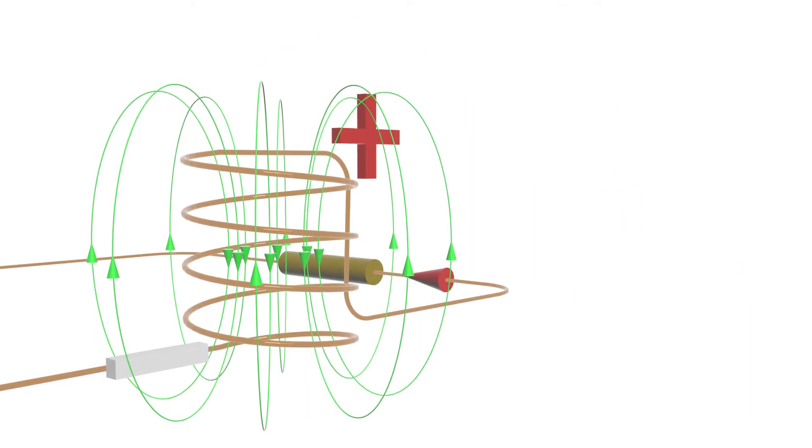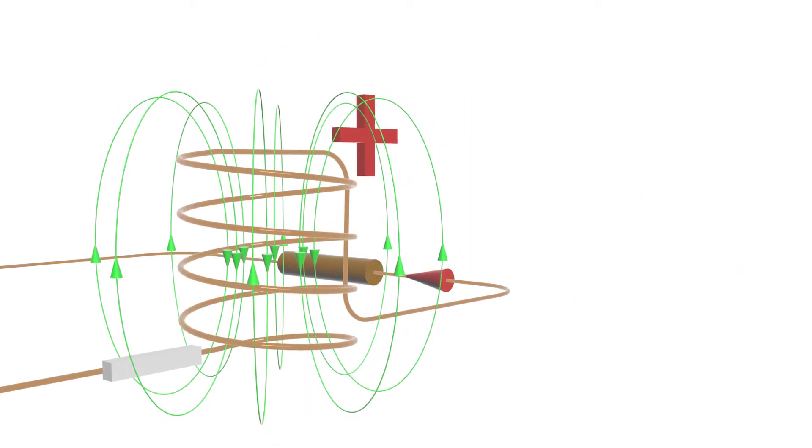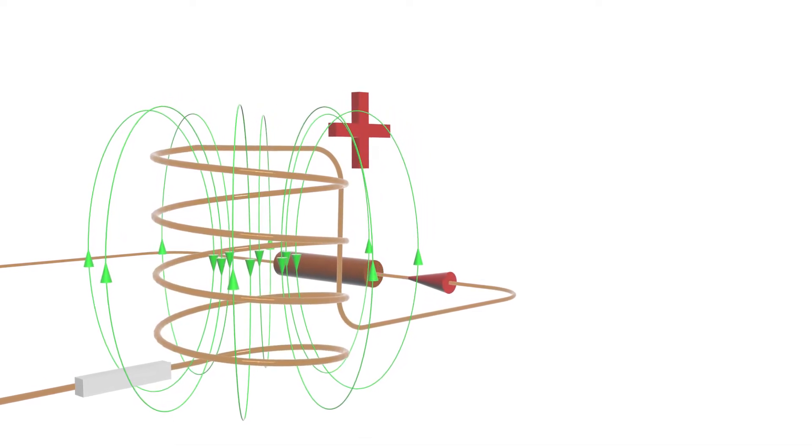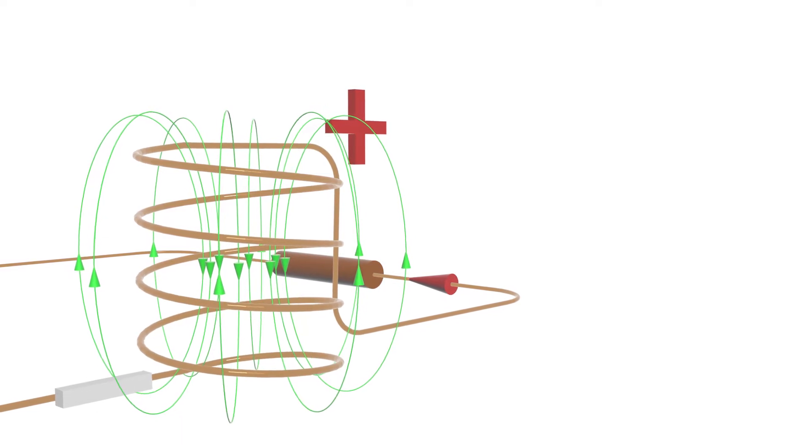Let's disconnect the power source. You can see the current is still flowing. But where's the energy coming from? As you may suspect, it's coming from the inductor, which is now the power source.